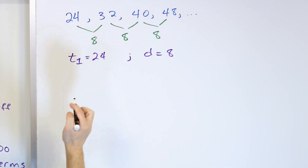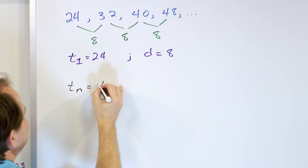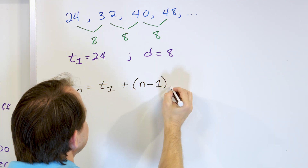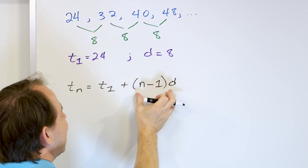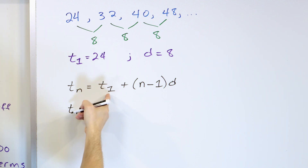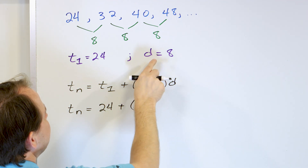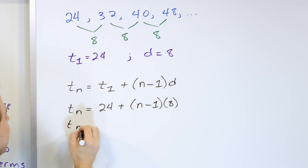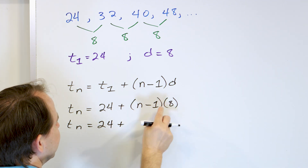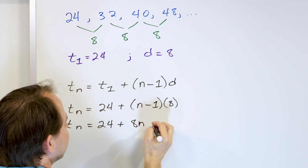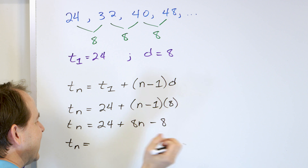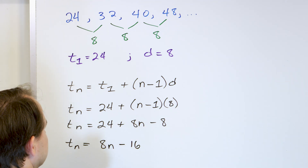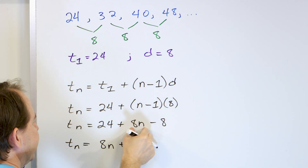Hopefully the equation makes sense to you: the nth term is just starting at term 1 and adding n minus 1 differences. For our particular example, the first term is 24, so T sub n equals 24 plus (n minus 1) times 8. Then distribute: 8 times n is 8n, and 8 times negative 1 is minus 8. So T sub n has 24 minus 8, which gives us 8n plus 16.